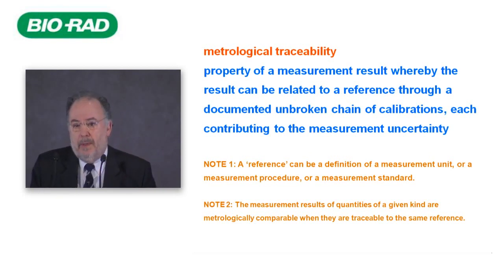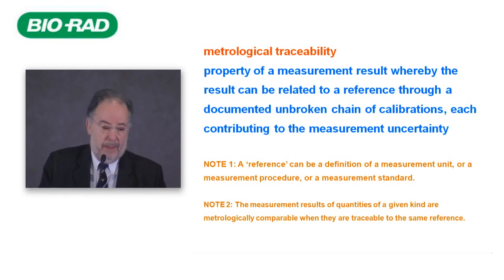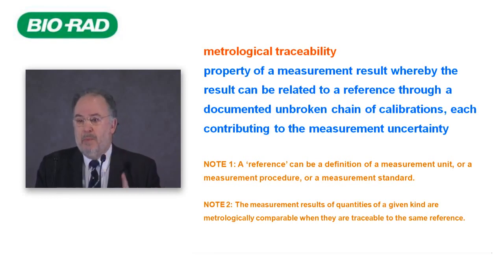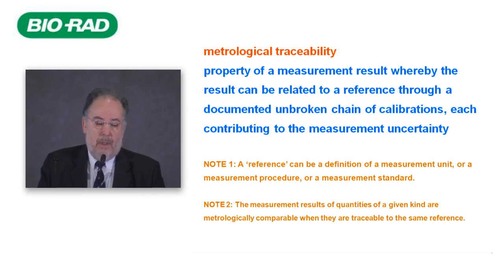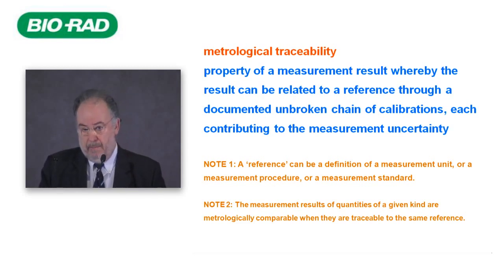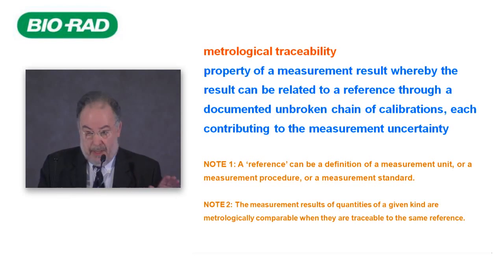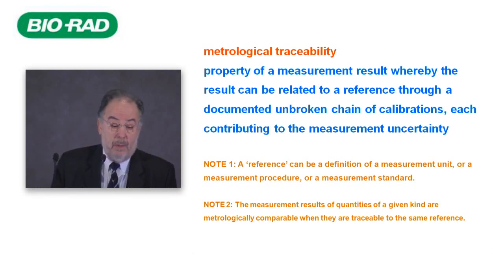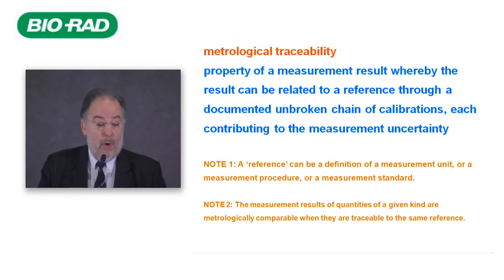The second very important concept is traceability. This is a metrological property of a measurement result. When traceability exists, the result can be related to a reference through a documented and unbroken chain of calibrations, with each calibration contributing to the measurement uncertainty. The reference can be a definition of a measurement unit, a measurement procedure, or a measurement standard.